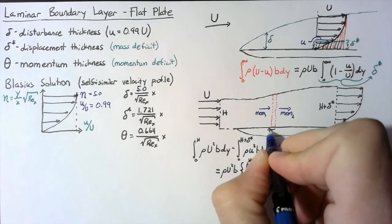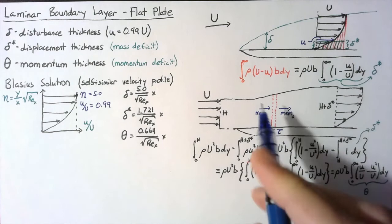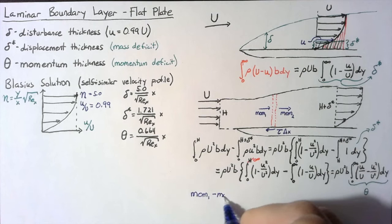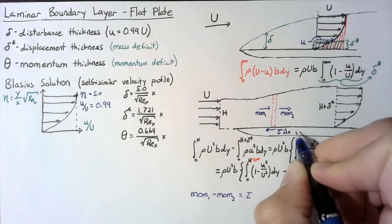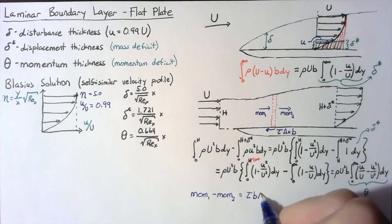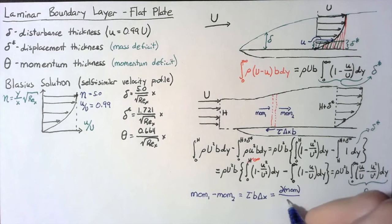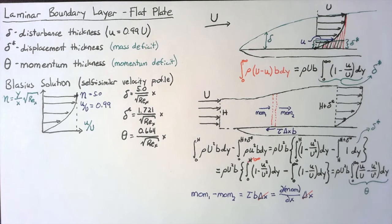So we need some forces to change our momentum, and that force comes from our bottom surface. This is going to be just tau multiplied by the thickness of our control volume, which is just delta x. So momentum 1 minus momentum 2 is going to be equal to tau times b times delta x. But we can also say that this change in momentum is going to be the change in momentum with respect to x multiplied by delta x, so these delta x's will cancel out. We've linked tau to the amount of momentum.